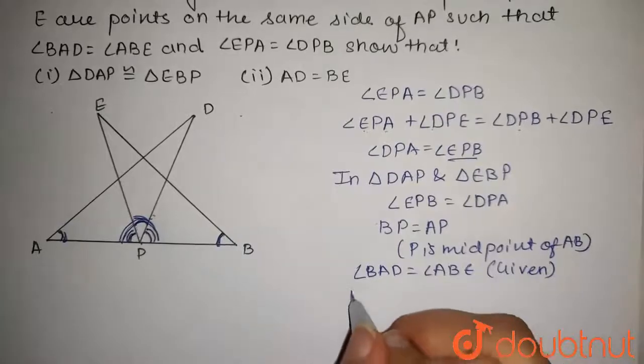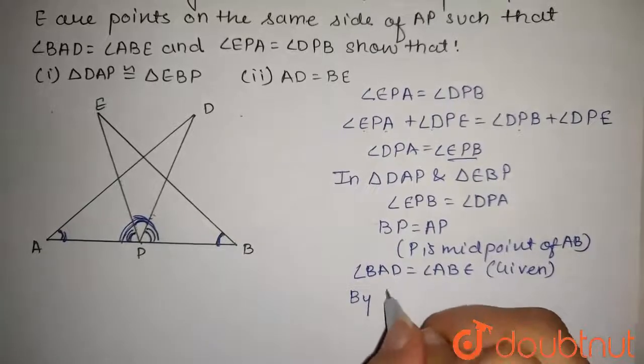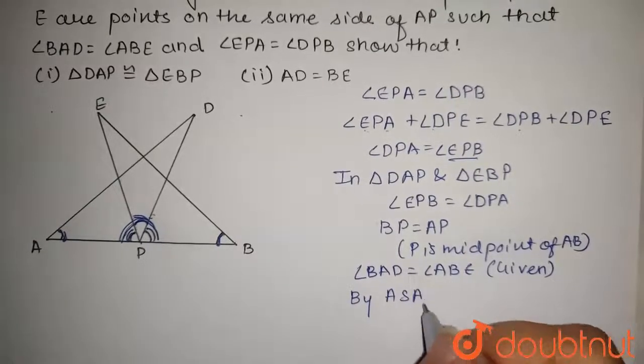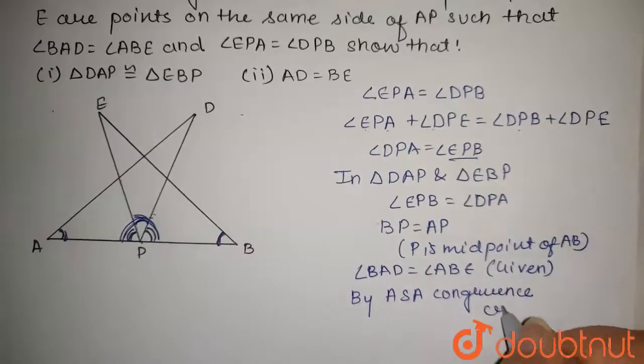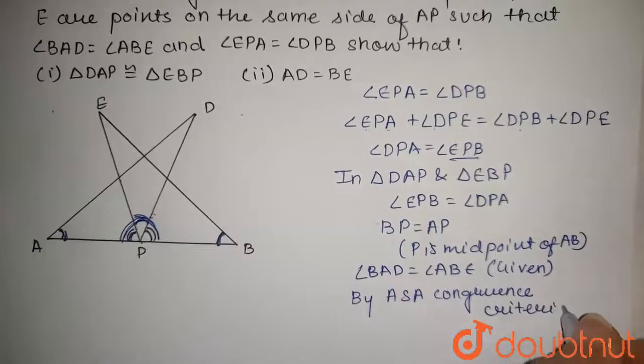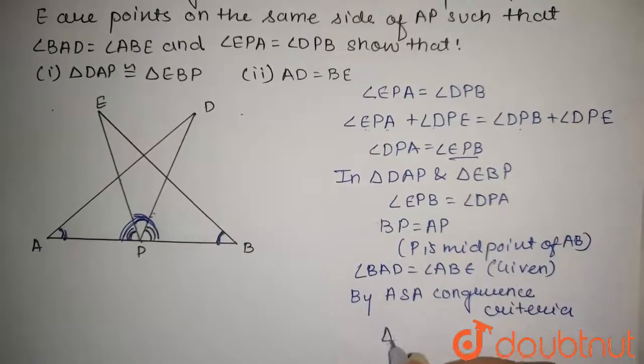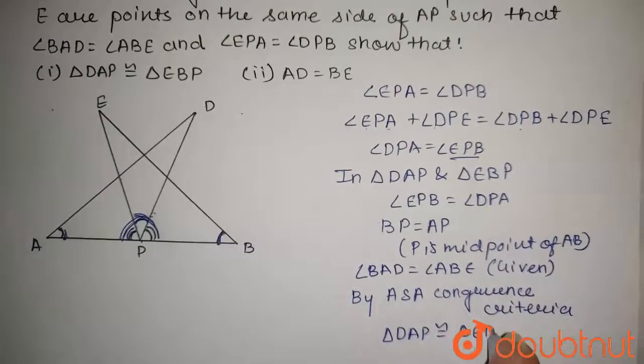Now, by ASA, that is angle-side-angle congruence criteria, we can say that triangle DAP is congruent to triangle EBP.